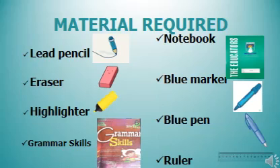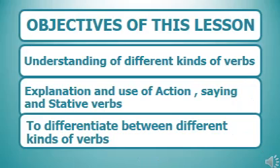Material required for this lesson: pencil, eraser, highlighter, Grammar Skills book, notebook, blue marker, blue pen, and ruler. Objectives of this lesson: number one, understanding of different kinds of verbs; number two, explanation and use of action, saying, and stative verbs; number three, to differentiate between different kinds of verbs.